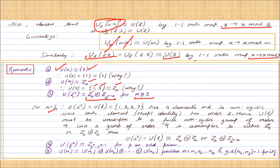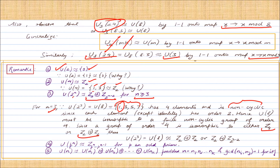To verify for n = 3: U8 = {1, 3, 5, 7}, the elements coprime to 8. This group is non-cyclic because all non-identity elements have order 2. For a group G to be cyclic, at least one element must have order equal to the order of G itself. Since no element of U8 has order 4, U8 is non-cyclic. Any group of order 4 is isomorphic to either Z4 or Z2 × Z2, and cyclicity determines the correct choice.